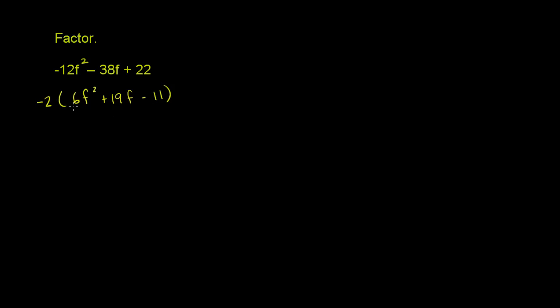We've simplified it a bit. We have 6f² + 19f - 11. We'll just focus on that part right now. The best way to factor this, since we don't have a 1 as the coefficient on the f², is to factor by grouping.